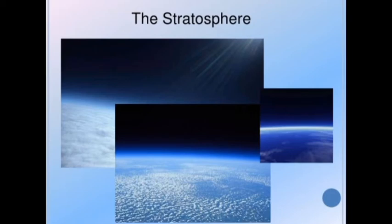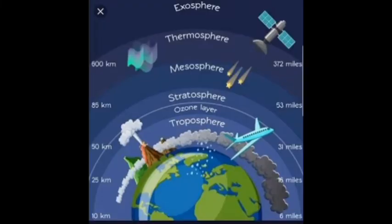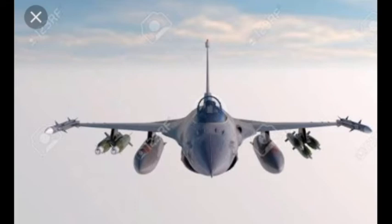Now let's learn about the second layer — the stratosphere, which is above the troposphere. This layer extends up to a height of about 50 kilometers from the mean sea level. In this layer, air moves horizontally and it is almost free from all types of weather phenomena with no clouds, making it very clear. Thus, jet planes fly in this layer.